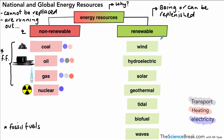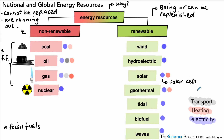In terms of our renewable energy resources, all seven are used to generate electricity. We can also use solar energy and geothermal for generating heat. It's worth pointing out that solar cells transfer light energy into electricity, whereas solar panels absorb the sun's infrared radiation for heating water, for example. So we can differentiate between those two for our solar energy resource.